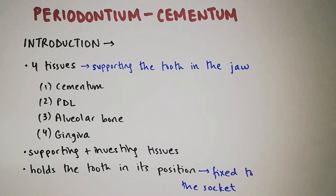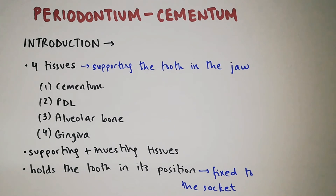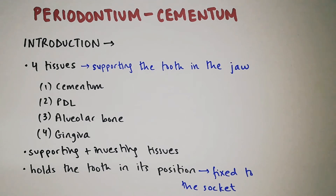Today we're going to discuss periodontium. Periodontium is defined as those tissues that support the tooth in the jaw. These are cementum, periodontal ligament, alveolar bone, and the gingiva. They are the supporting and investing tissues that hold the tooth in its position fixed to the socket. I'm going to divide periodontium into four lectures. Today's lecture is regarding cementum.